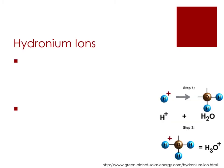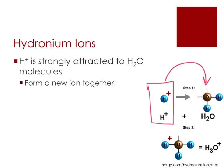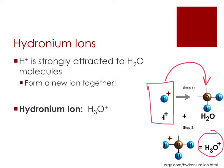Before we go further with the Brønsted-Lowry definition, I want to talk about hydronium ions, because they're going to play a big part in what comes next. When acids dissociate, their H+ ions don't just float around in solution. Instead, they are strongly attracted to H2O molecules, and they actually form a new polyatomic ion. The H2O bonds with the H+ to form hydronium, or H3O+. This is an example of a polyatomic ion.